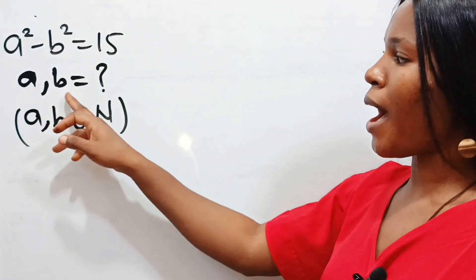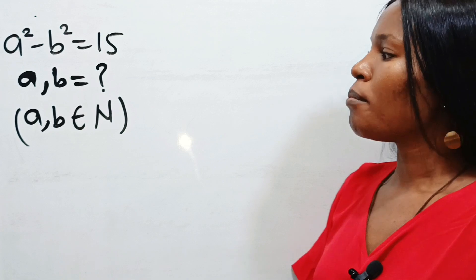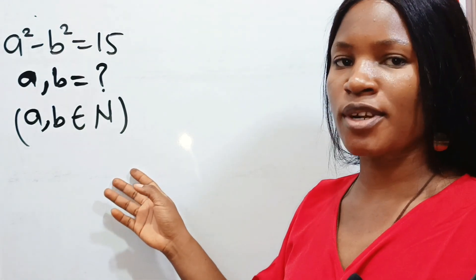Let's solve for the value of a and b if a and b are natural numbers. Many people failed this. Let's get straight to the point.